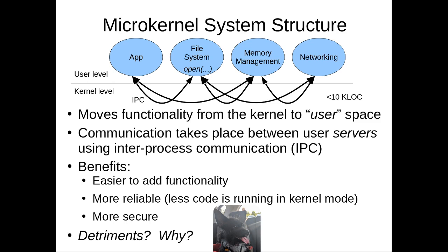The main downside is that these arrows aren't just system calls. They aren't just going from an application down to the kernel and returning. They're actually making a system call down to the kernel, returning up to user level to invoke the file system service, and then for the file system service to return its data, it needs to make what looks like another system call down to the kernel, which then returns not to the file system but to the application. So what used to be one system call actually becomes two system calls.